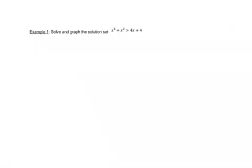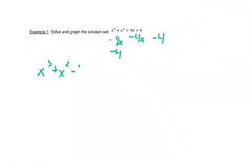So first thing we want to do is to move everything onto one side. So I'm going to subtract 4x and subtract 4 from both sides. So that leaves me with x cubed plus x squared minus 4x minus 4 is greater than zero.